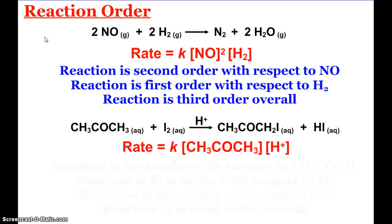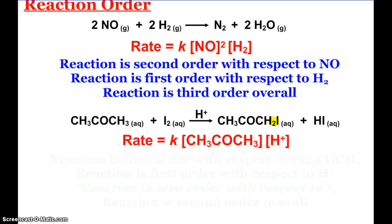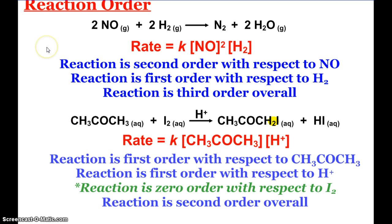Here we see an example where we have acetone reacting with iodine in acidic solution, so we have a catalyst here. Experimentally, we find that the rate is K times the concentration of acetone times the concentration of the hydrogen ion or catalyst. This reaction is first order with respect to acetone, first order with respect to our catalyst the hydrogen ion, and zero order with respect to iodine. Iodine is in the equation, but this is an example where it's not necessarily important to have a certain amount of iodine. We just need to have a little bit present.